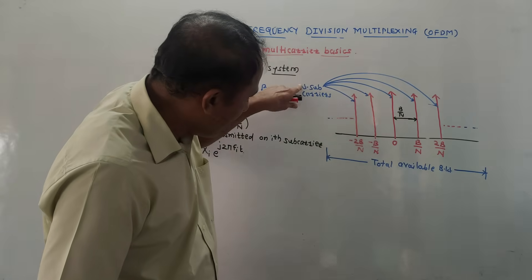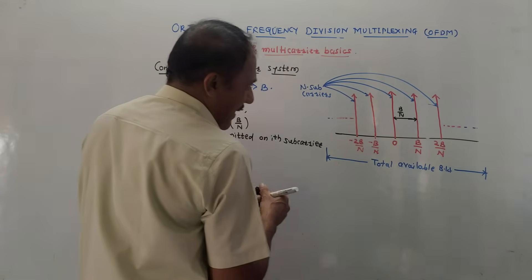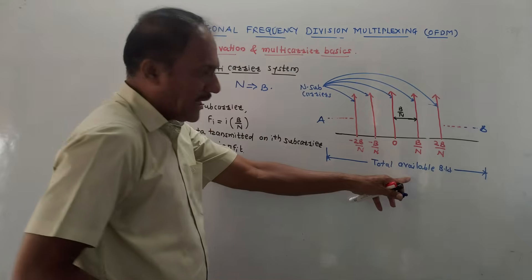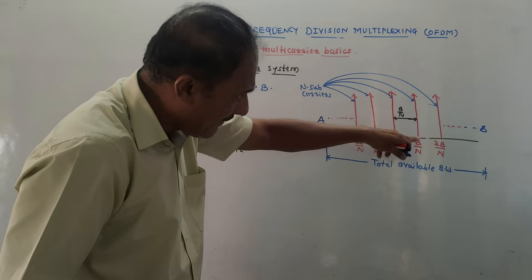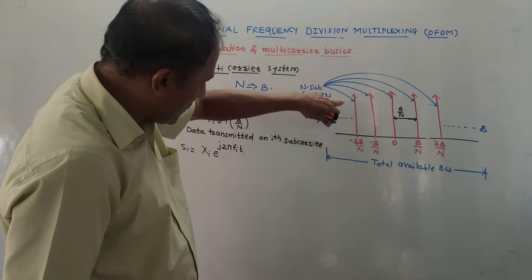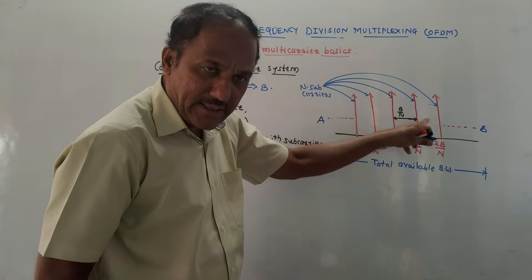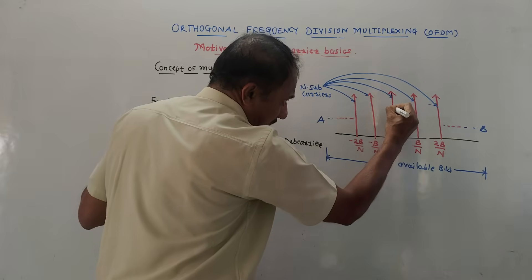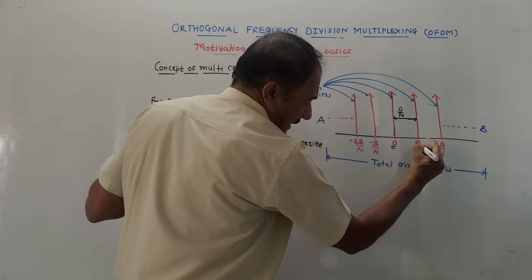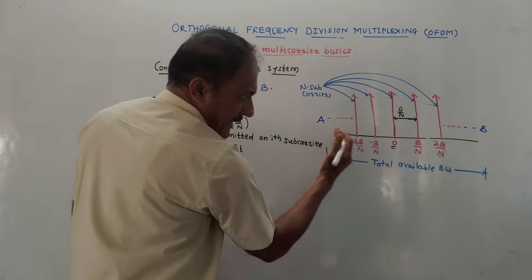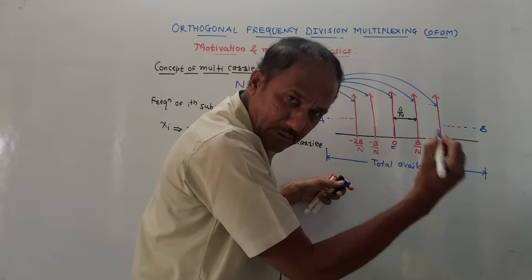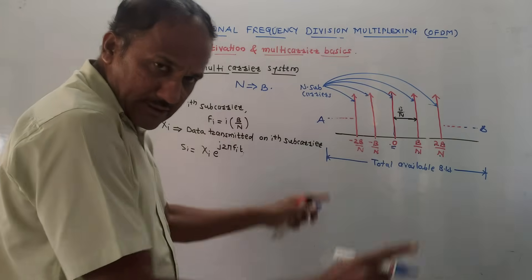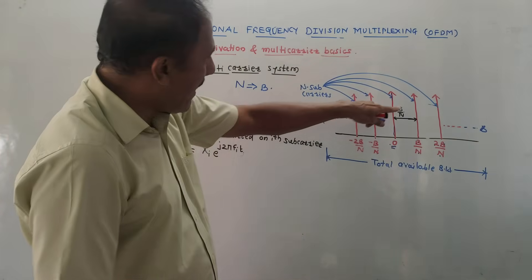The total available bandwidth from point A to point B is divided into N sub-carriers, as shown by vertical arrows. The center sub-carrier is at 0, the next is at B/N, the next at 2B/N, and similarly on the negative side. So the spacing or separation between each sub-carrier is B/N.